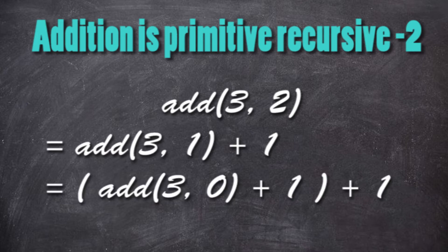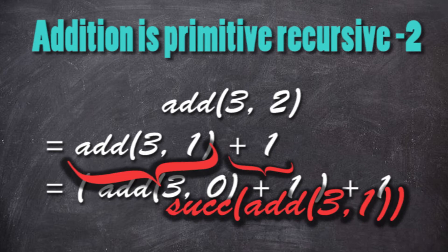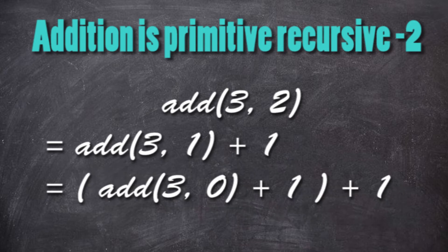And it's also equal to the addition of 3 and 0 plus 1 plus 1. We notice that the addition of 3 and 2 is defined by the successor of the addition of 3 and 1, and this is recursive until the addition of 3 and 0.